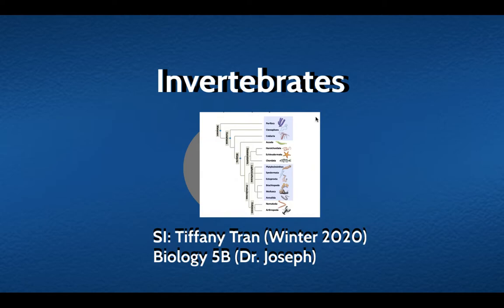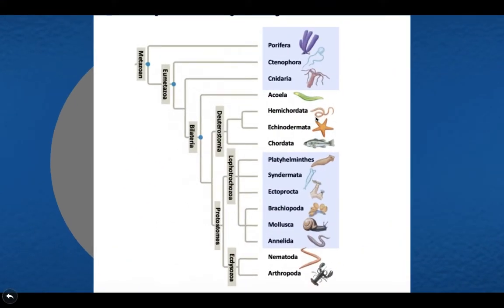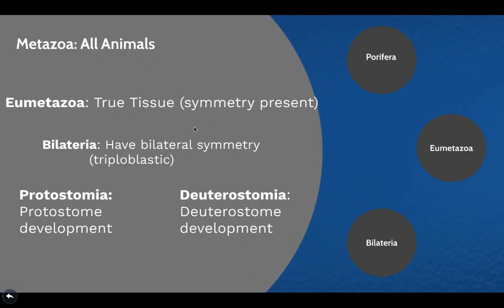Let's get right into it. This is the phylogenetic tree that we're going to be taking a look at for this video. We're going to be looking at the metazoan clade, the eumetazoan, the bilateria, and in particular the protostome branch of the bilateria clade. The deuterostomia clade is going to be left for a later time and won't be included in this video.